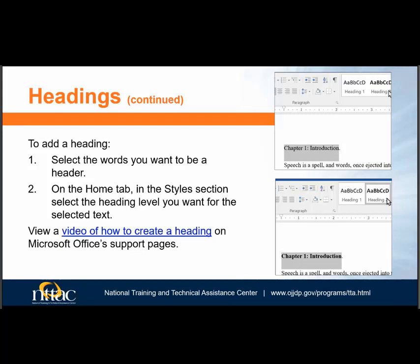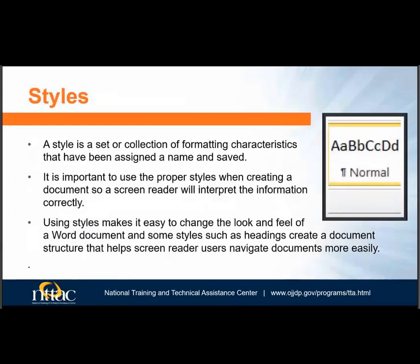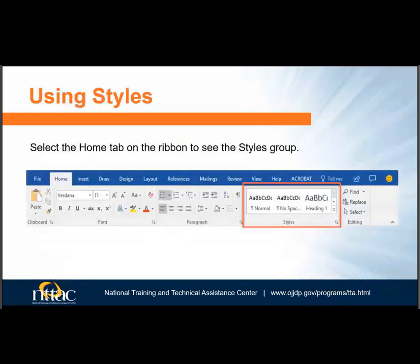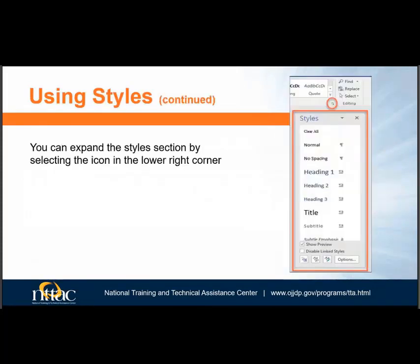Now let's talk about a related topic: Styles. Style is not something most people who regularly use Word know about. Usually a novice Word user changes the look and feel of a document by adjusting the font's type, color, weight, etc. Those changes do nothing to help a blind person using screen reader software. The Styles section can be found on the Home tab. It is sometimes easier to work with Styles if you expand the Styles group by selecting the icon in the lower right-hand corner. It will then be displayed on the right-hand side of your screen.